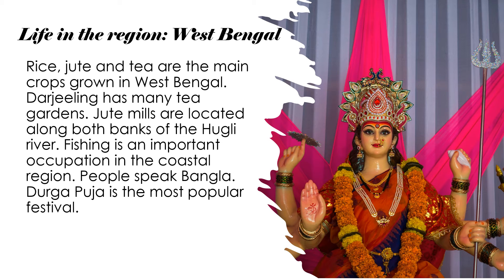West Bengal: Rice, jute and tea are the main crops grown in West Bengal. Darjeeling has many tea gardens. Jute mills are located along both banks of the Hooghly River. Fishing is an important occupation in the coastal region. People speak Bangla. Durga Puja is the most popular festival.